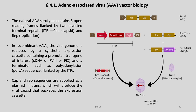Let us have a small discussion on the adeno-associated virus vector biology. The natural AAV serotype contains 3 open reading frames flanked by 2 inverted terminal repeats (ITRs) — capsid and replication. In recombinant AAVs, the viral genome is replaced by a synthetic expression cassette containing a promoter, transgene of interest — cDNA of factor 8 or factor 9 in this case — and a terminator such as a polyadenylation signal, flanked by the ITRs. Cap and rep sequences are supplied as a plasmid in trans, which will produce the viral capsid that packages the expression cassette.